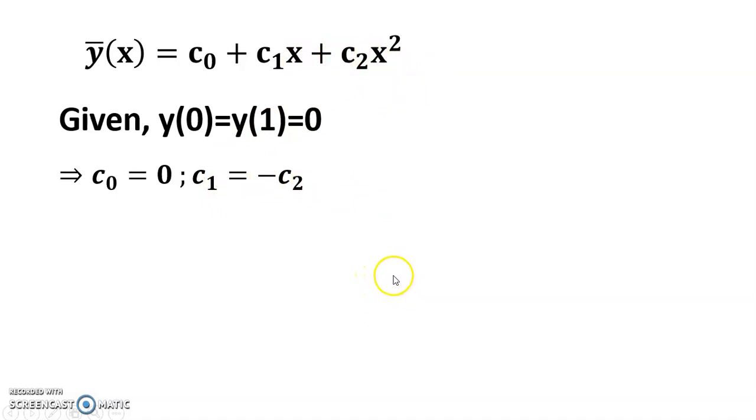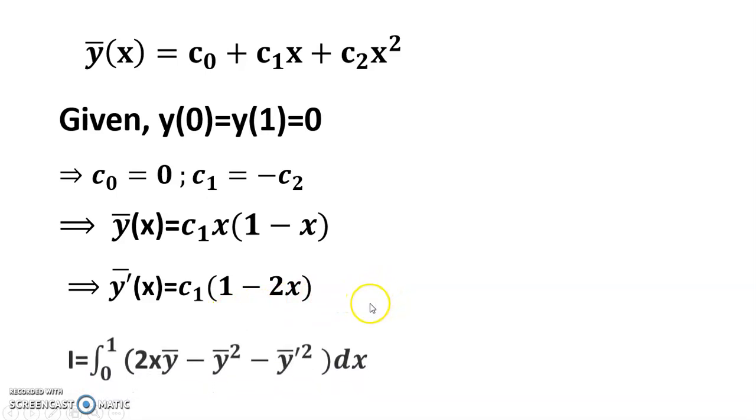I get y bar is equal to c one x into one minus x, and y bar dash is equal to c one into one minus two x. And I equals to zero to one [2x y bar minus y bar square minus y dash square] dx.